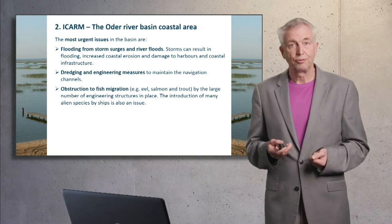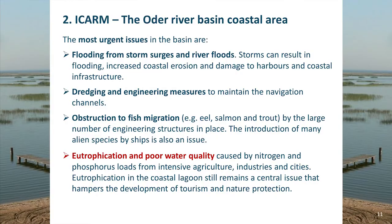Most important in this river basin, however, was eutrophication and poor water quality. This is mainly caused by nitrogen and phosphorus nutrient loads from intensive agriculture, from cities and industries. The heavy eutrophication of the coastal zone and the lagoon hampers the economic development of the area.